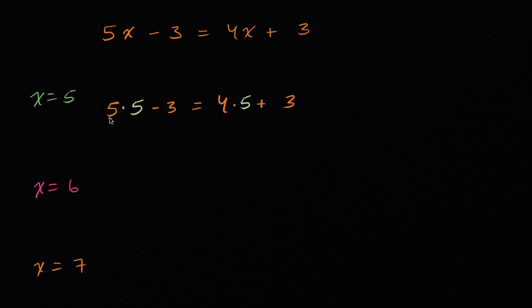Now is this true? Let's see, five times five is twenty-five. It's going to be twenty-five minus three needs to be equal to twenty plus three. Twenty-five minus three is twenty-two needs to be equal to twenty-three. No, this is not true. So x does not equal five. So this is not a solution.